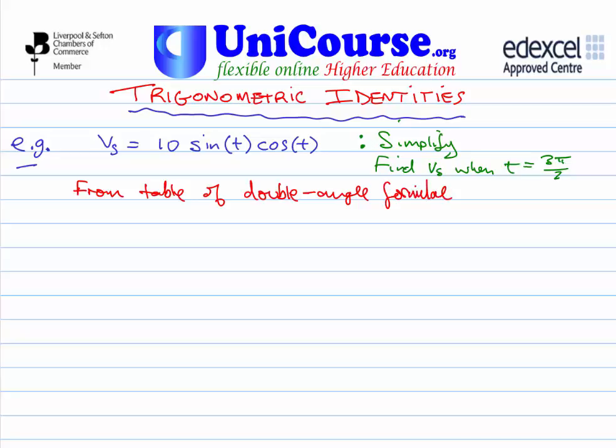And we see this identity: the sine of 2t equals 2 times the sine of t times the cos of t. Okay, so what we're hoping to do is to convert this to look something like this.